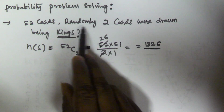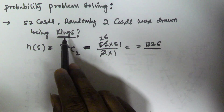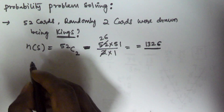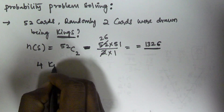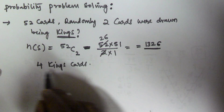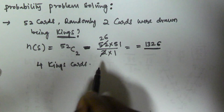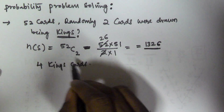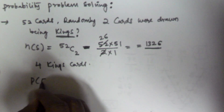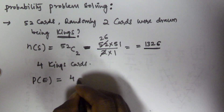Now we have to find the probability of randomly selecting two cards that are kings. As you know, from the pack of 52 cards there are going to be four kings cards. From these four kings cards, we have to select two kings. So the probability of event E — selecting two kings out of these four kings — is going to be 4C2.